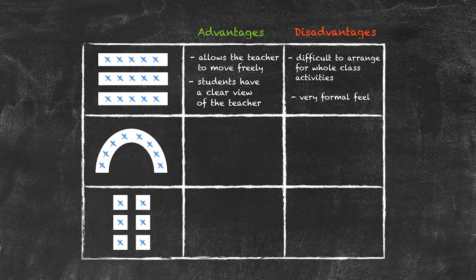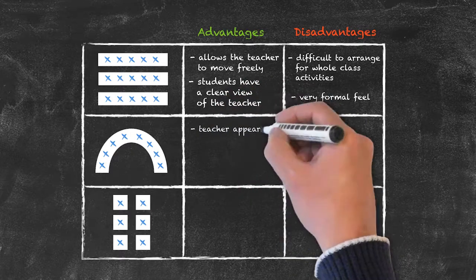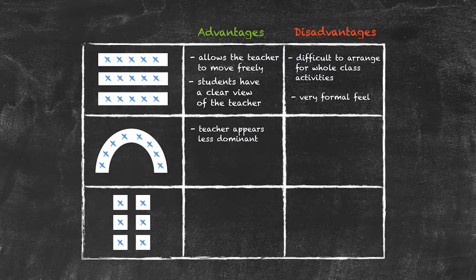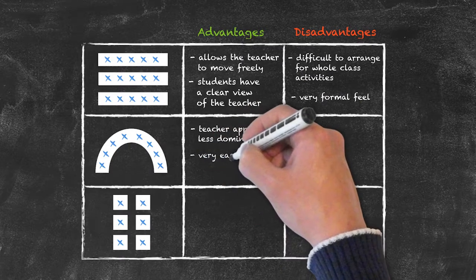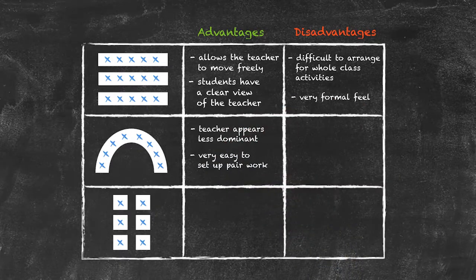One potential way of getting around this is to use the horseshoe arrangement. Some of the advantages of this system are that the teacher appears less dominant within the horseshoe, and secondly it's very easy to arrange pair work.